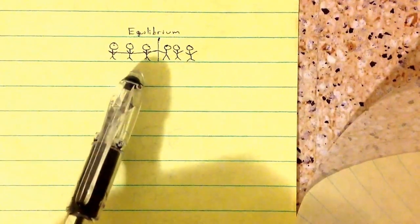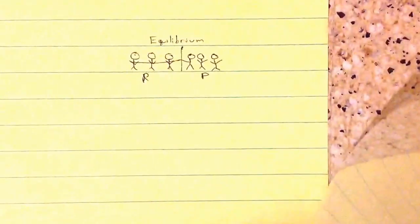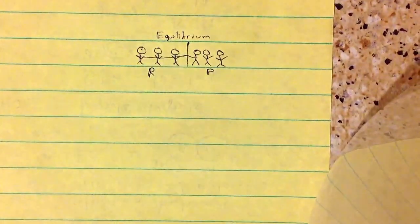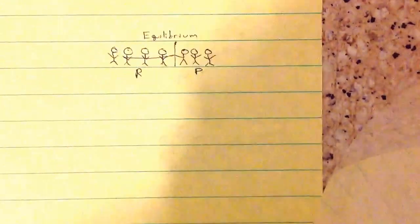So let's say you add, and let's say this side is reactants and this side is products. Let's say you added a reactant right here. Now there's four reactants.